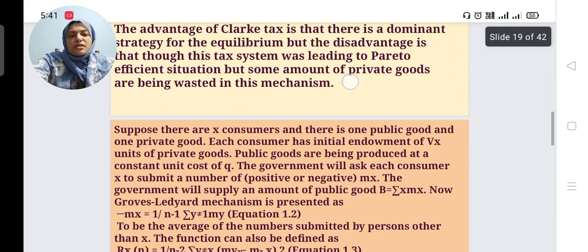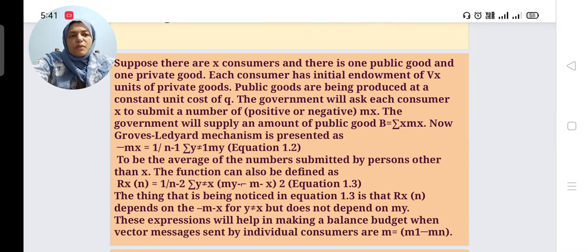Suppose there are n consumers. There is one public good and one private good. Each consumer has initial endowment of x units of private goods. Public goods are being produced at constant unit cost of q. The government will ask each consumer x to submit a number of positive or negative mx.